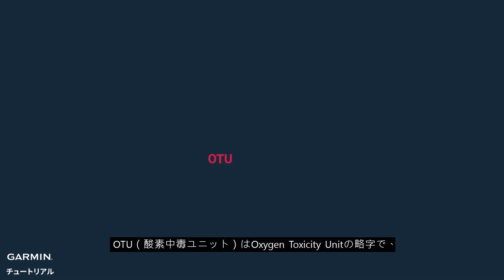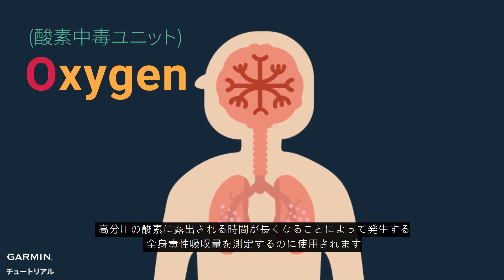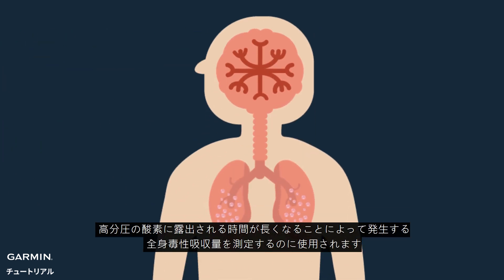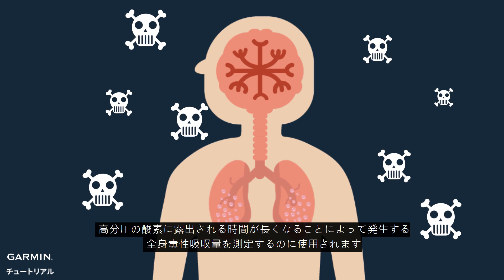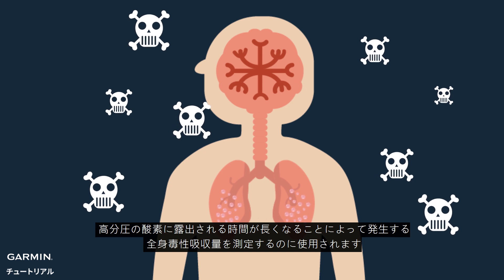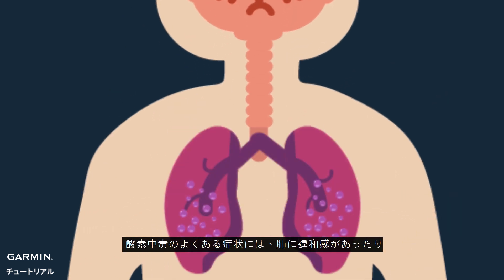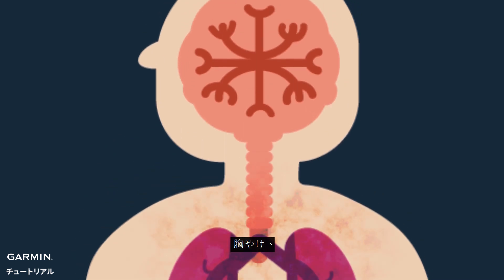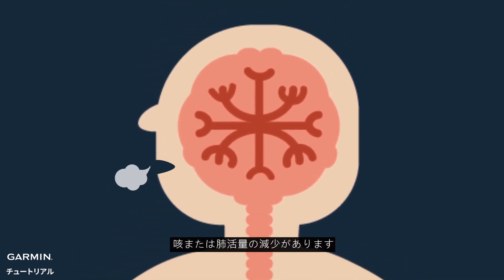OTU refers to oxygen toxicity unit, used to measure systemic absorption toxicity caused by prolonged exposure to high oxygen partial pressure. The most common symptoms are discomfort in the lungs, burning sensation in the chest, coughing, and reduced vital capacity.